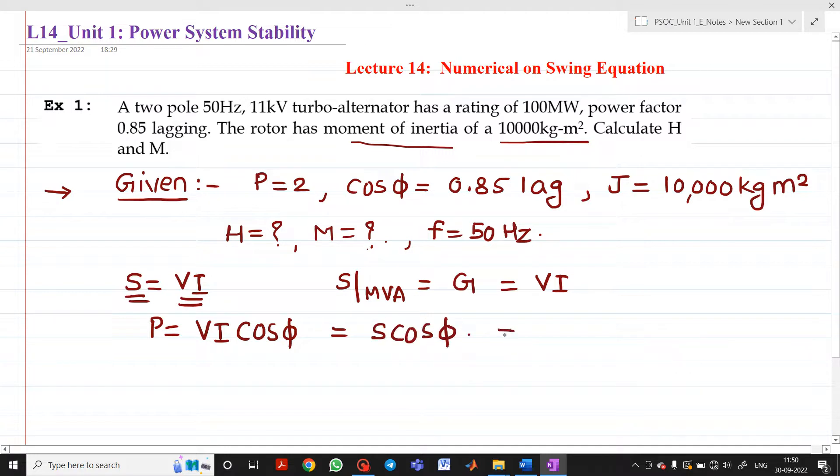From this I can write S equals P divided by cos phi. The value of P is 100 megawatt, the rating of the turbo alternator. The cos phi value is 0.85.